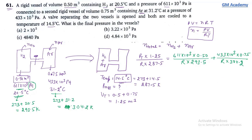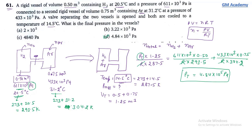In this equation, R cancels out. The only unknown is total pressure after opening the valve. Solving the equation gives 4.84 × 10⁵ Pascal. Option D is the correct answer.